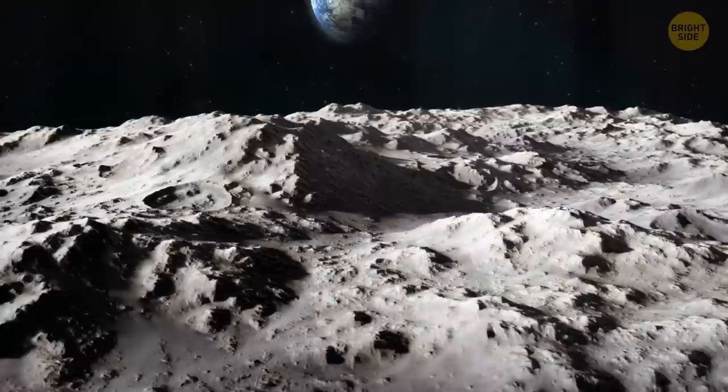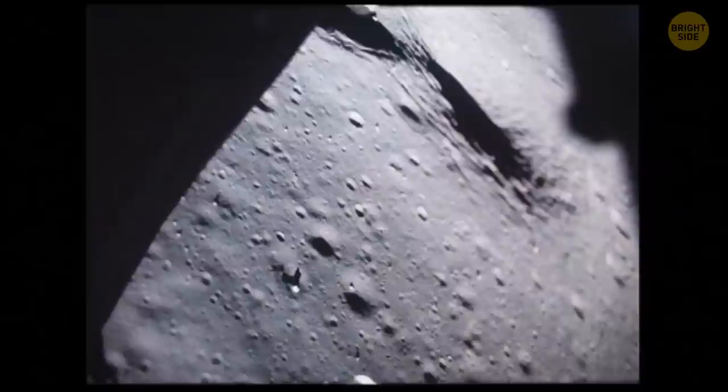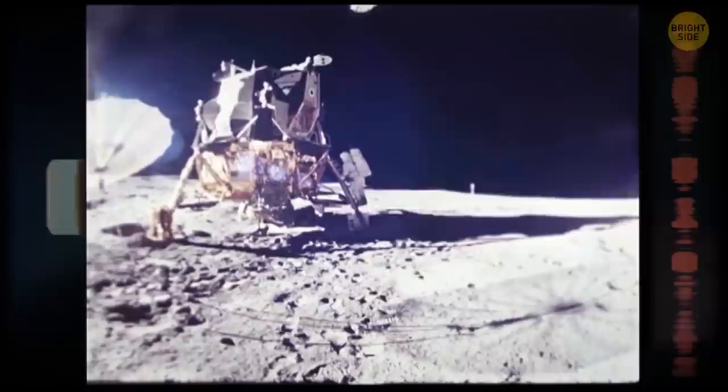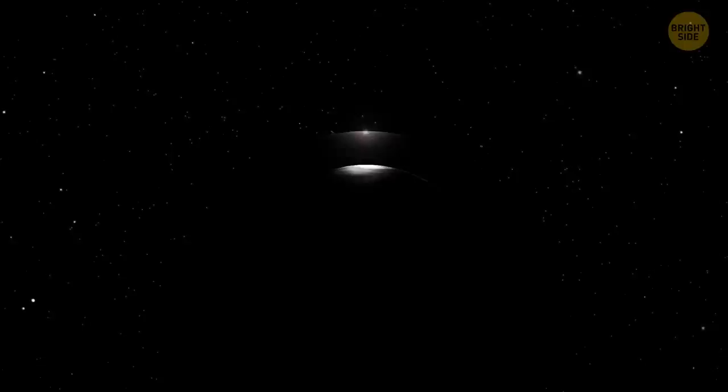When they were getting ready to send missions to the moon, some researchers were worried because there was a thick layer of dust on the lunar surface. They were afraid seas of dust were both soft and thick enough to swallow their lunar lander. But even though the surface there is dusty, this layer is just too thin to cause complications.